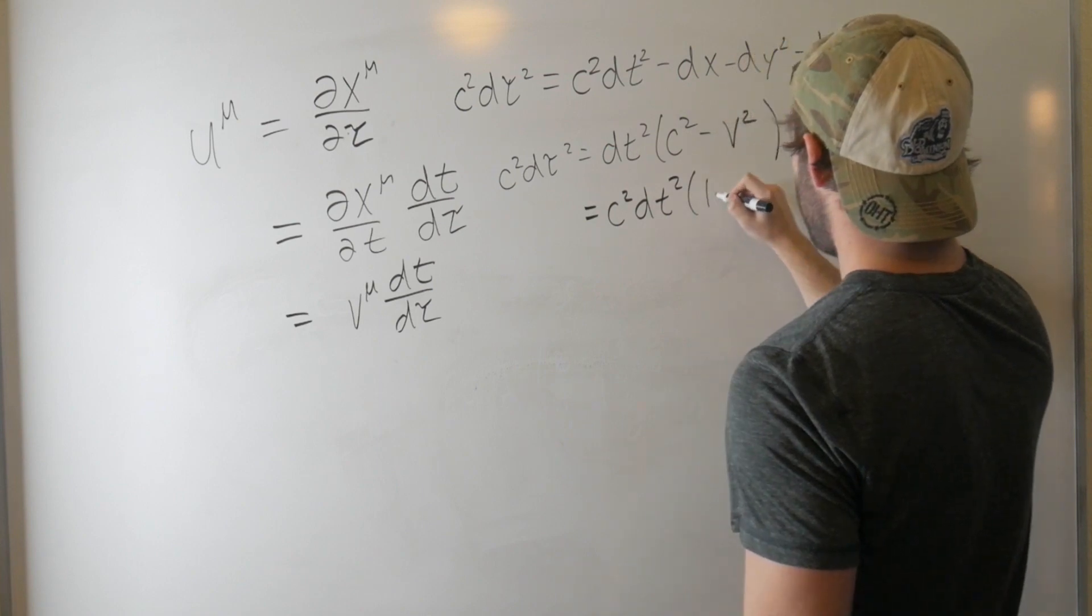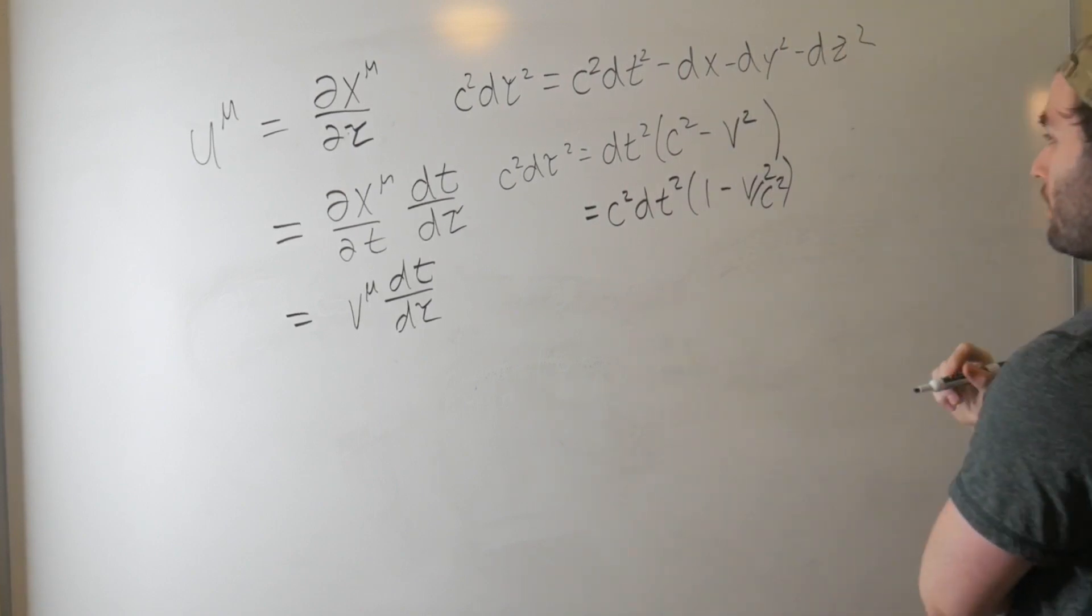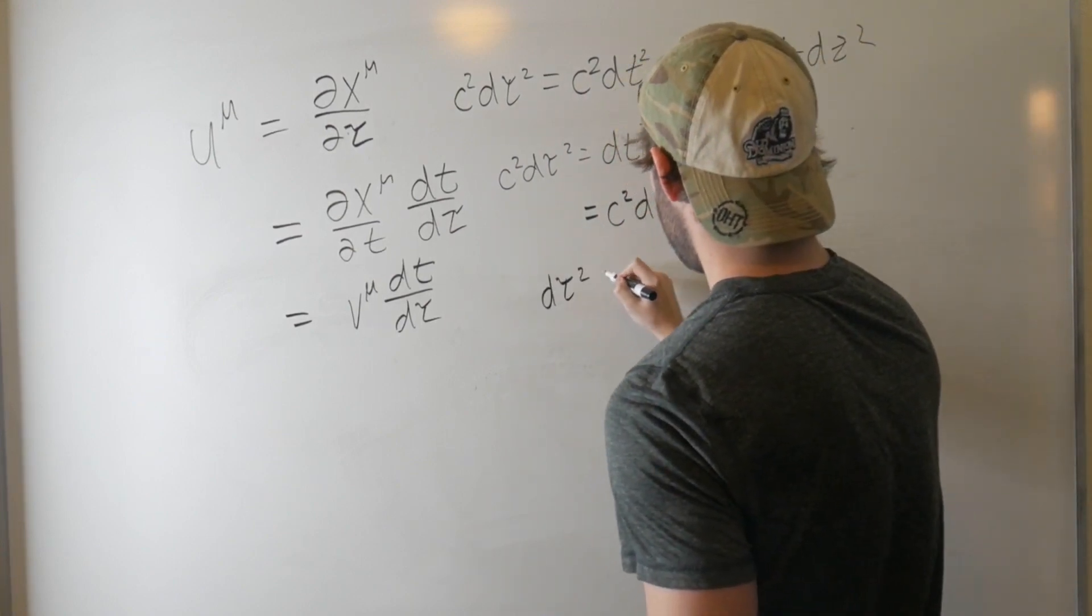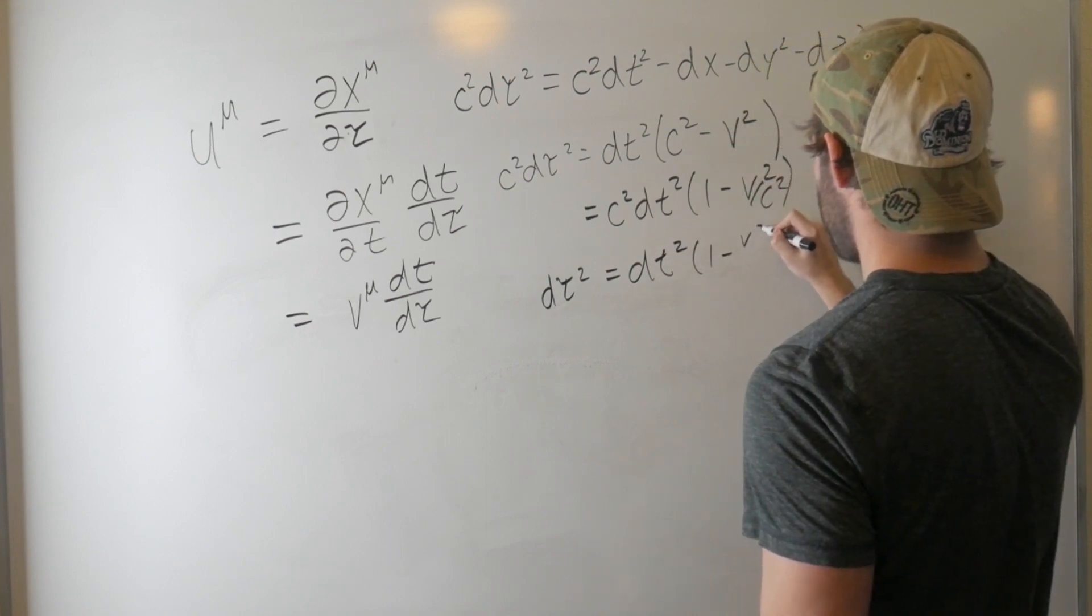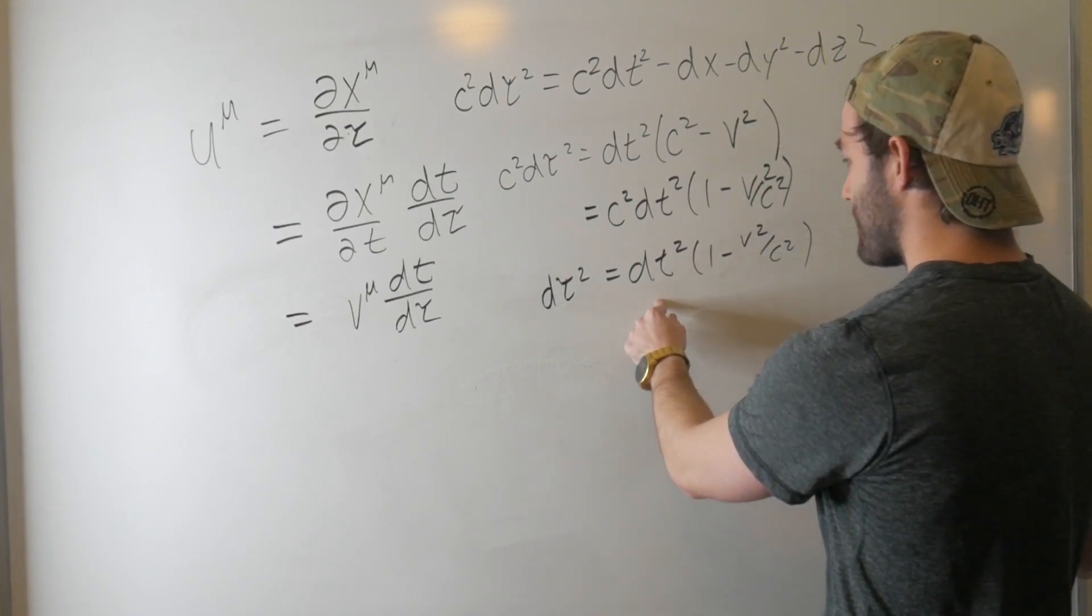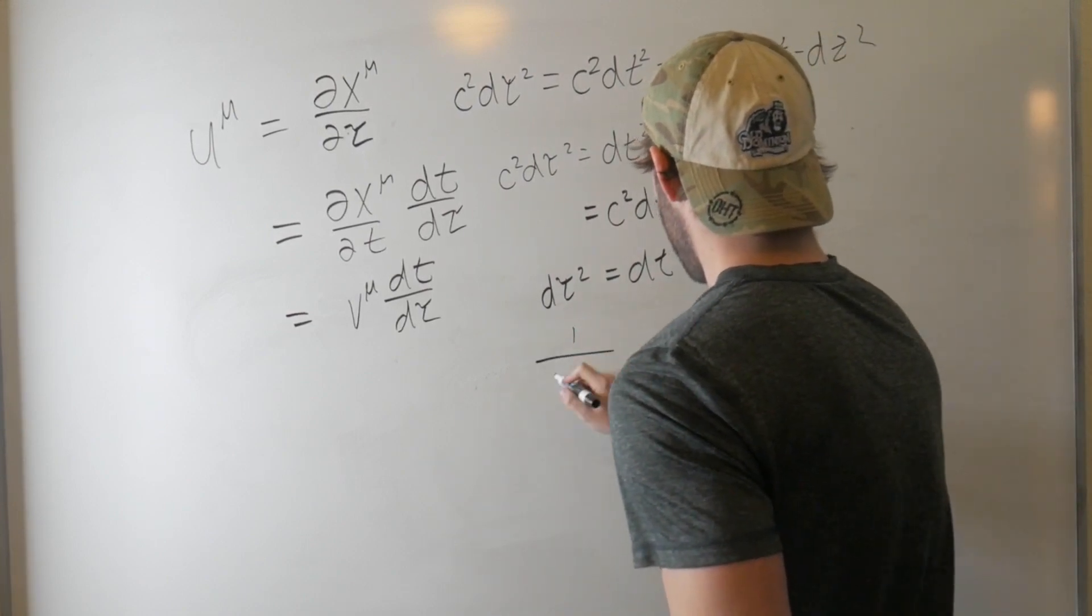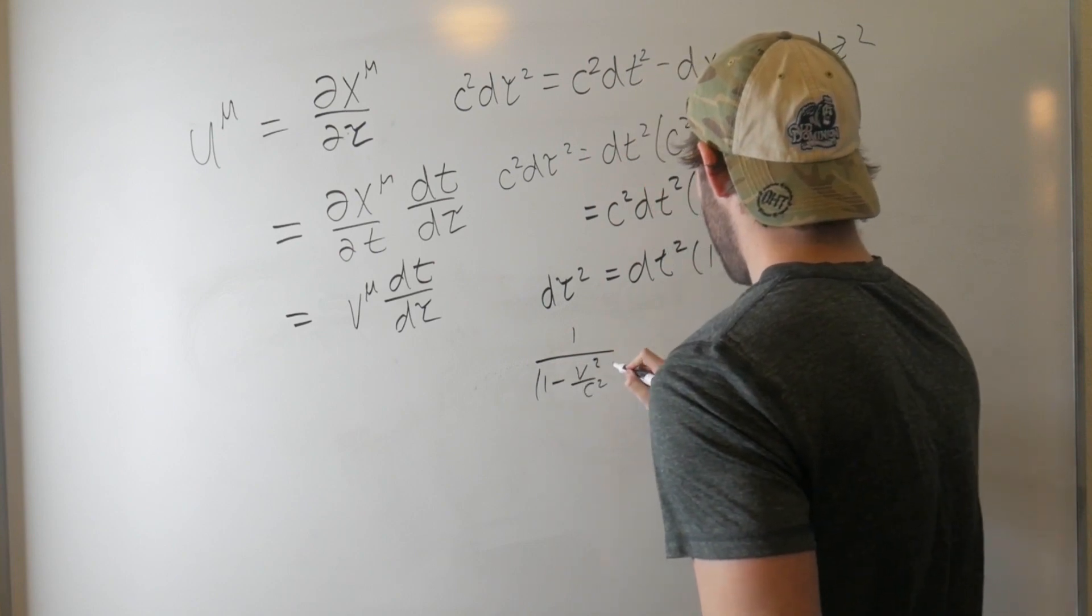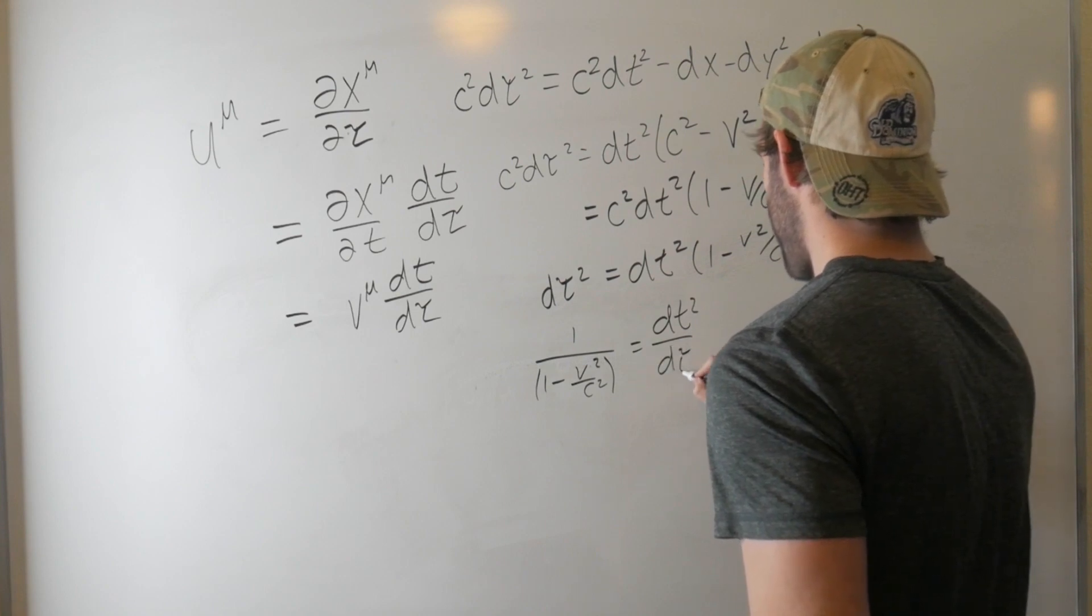dτ² over c². And then the c² cancel. And we get the dτ² is equal to dt² times one minus v² over c². Divide both sides this stuff over. You guys know algebra. And we get one over one minus v² over c² is equal to dt² over proper times squared.